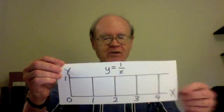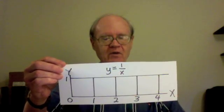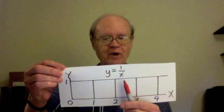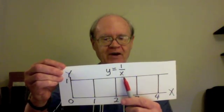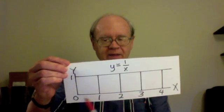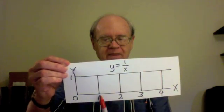When x is 1 in this equation, y is 1 over 1, which is 1. And so we have the x-y pair 1, 1. That means I go over 1 and up 1, and I mark that point.